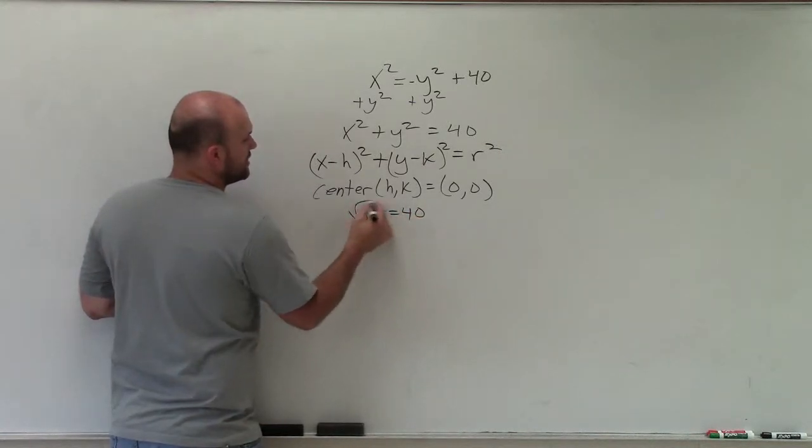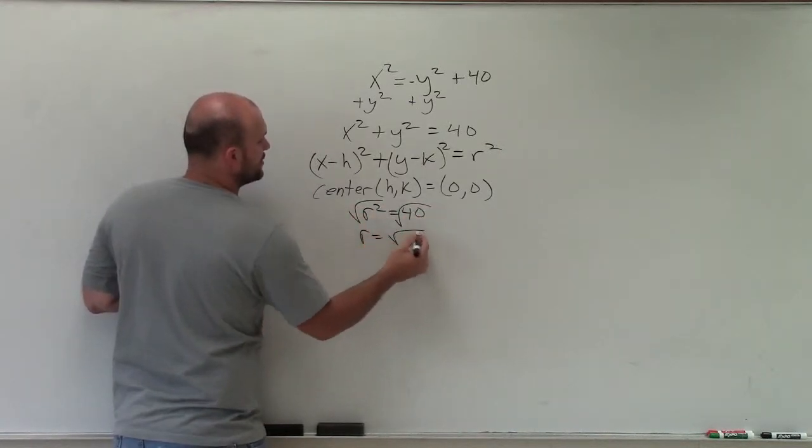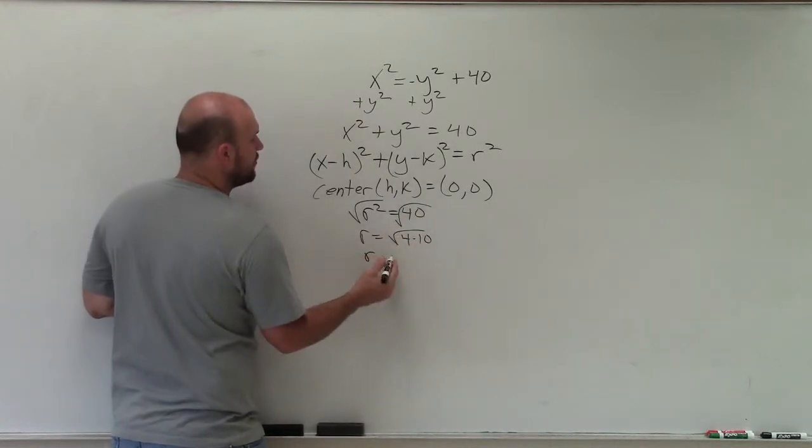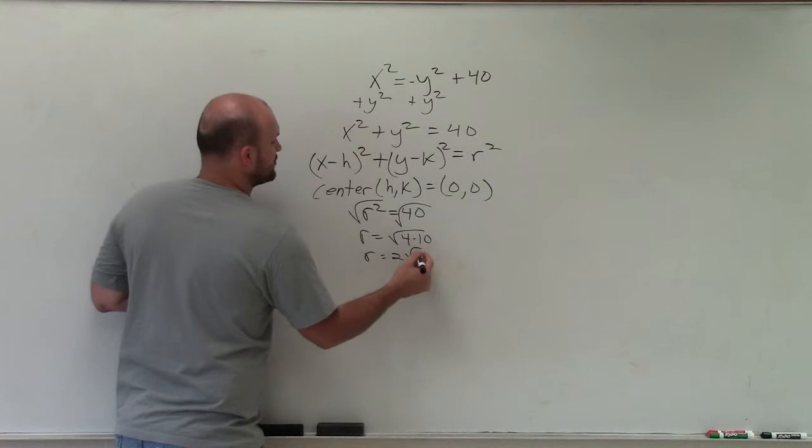So now to solve for r, I take the square root of both sides. r equals the square root of 40. I can rewrite as 4 times 10. I can take the square root of 4, which is 2 times the square root of 10.